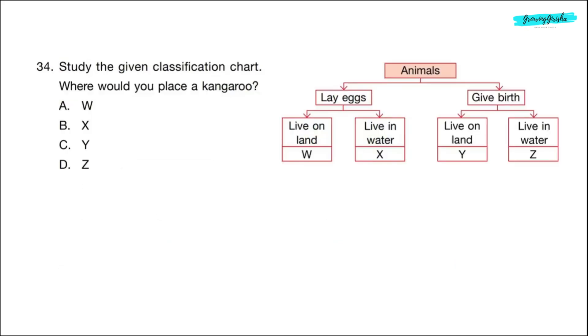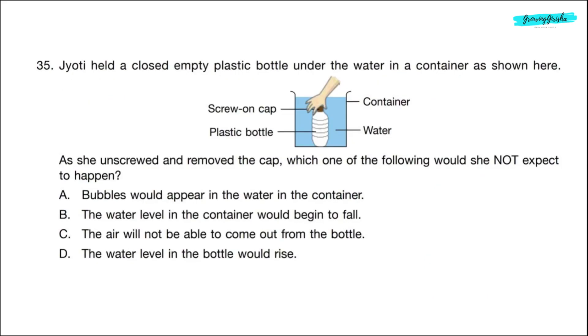Question 34. Study the given classification chart. Where would you place a kangaroo? Animals reproduce either by laying eggs or by giving birth. Kangaroo gives birth to its young ones and it lives on land. So correct answer is option C. Question 35. Jyoti held a closed empty plastic bottle under the water in a container as shown here. As she unscrewed and removed the cap, which one of the following would she not expect to happen? Correct answer is option C. The air will not be able to come out from the bottle.